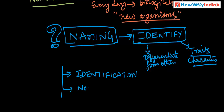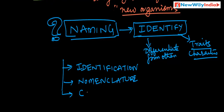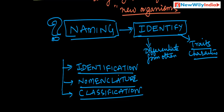The second step is nomenclature — giving the name. After naming, you have to classify it; that is called classification. These are the three basic fundamental steps involved in biodiversity: identification, nomenclature, and classification. Otherwise there is a lot of confusion — if you call an organism by one name and someone else calls it by a different name, there is confusion. So you have to give a proper name, identify it, and classify it.